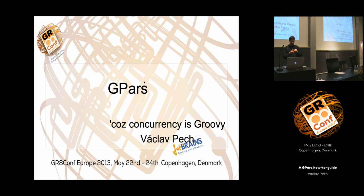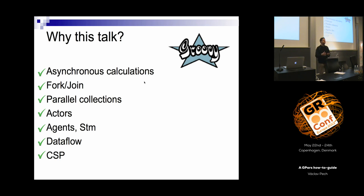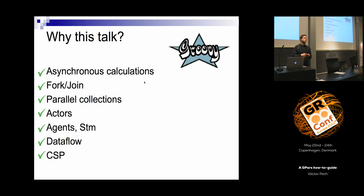GPars is a multi-paradigm framework. It offers several different abstractions, each good for something different. I've heard from many people that it would be nice if we provided some guide on when to pick which abstraction and what it is good for. So this is what this talk is for — not the theoretical concepts, but how and when to use each concept available in GPars.